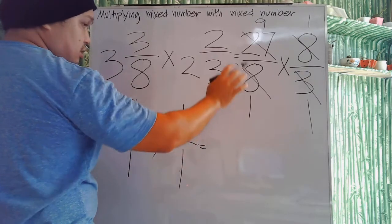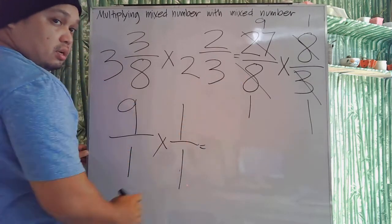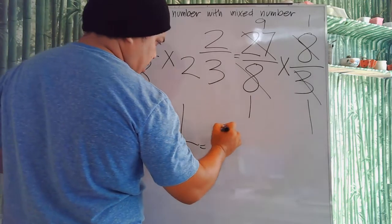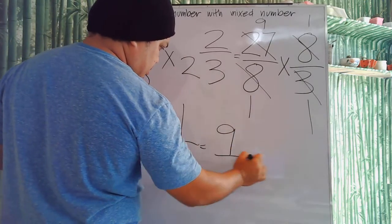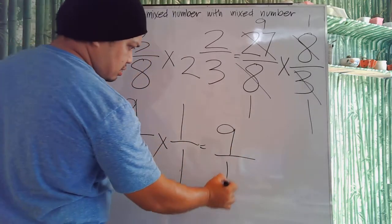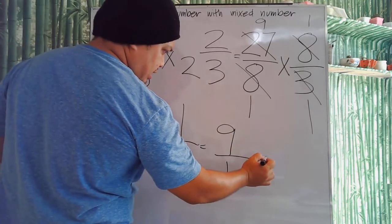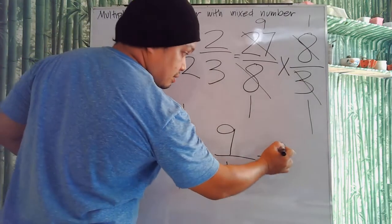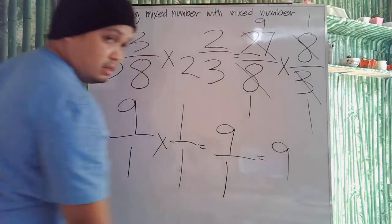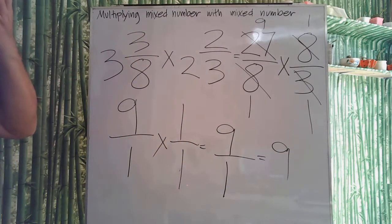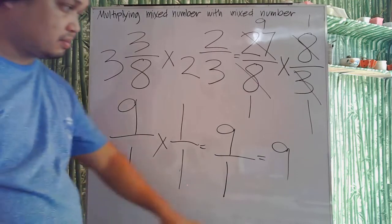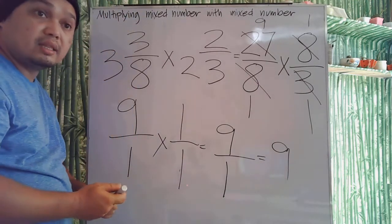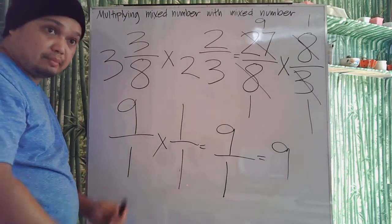Because we used the cancellation method, we now multiply: 9 times 1 is 9, and 1 times 1 is 1, so 9 divided by 1 is 9. Therefore, for our final answer, it's 9. Let's have one last example to wrap up our lesson for today.